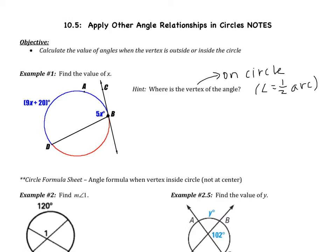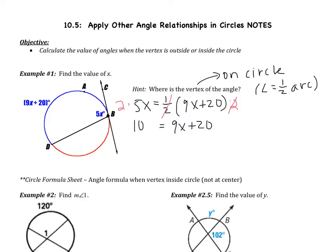In this case, our angle is 5x — that's angle CBD. So I'm going to have 5x equals one half of arc DAB, which is 9x plus 20. I don't really like fractions, so I'm going to multiply both sides by 2. That cancels the one half, giving me 9x plus 20. Two times 5x gives me 10x. Subtracting 9x, I get x equals 20.